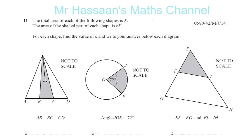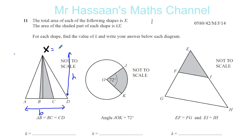The perpendicular height goes from the vertex down to the base. The area of the big triangle is x — they say it's x — and that equals half times the base AD times the vertical height. Now, B to C is the base of the shaded triangle. The vertical height is the same. They've told us that AB, BC, and CD are all equal, so each length is the same as the other.